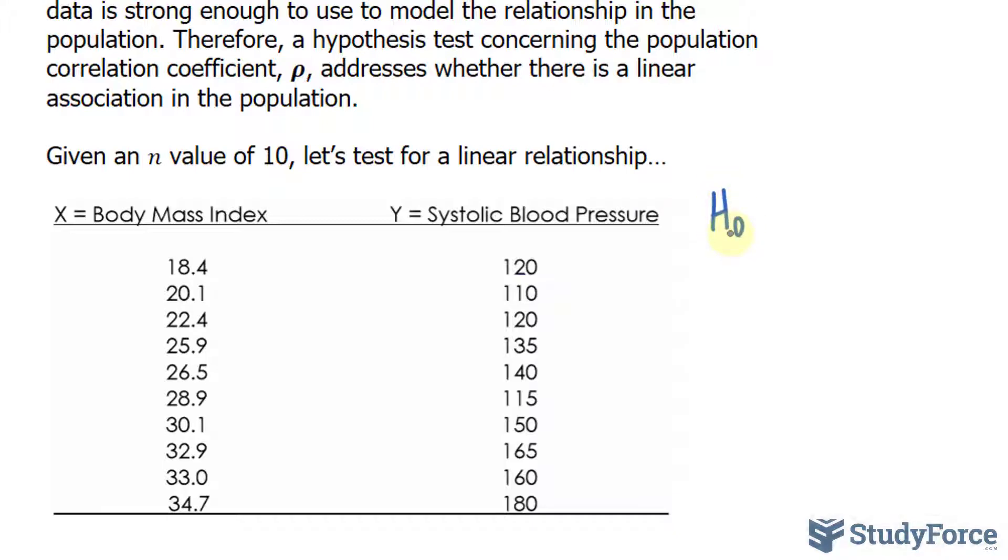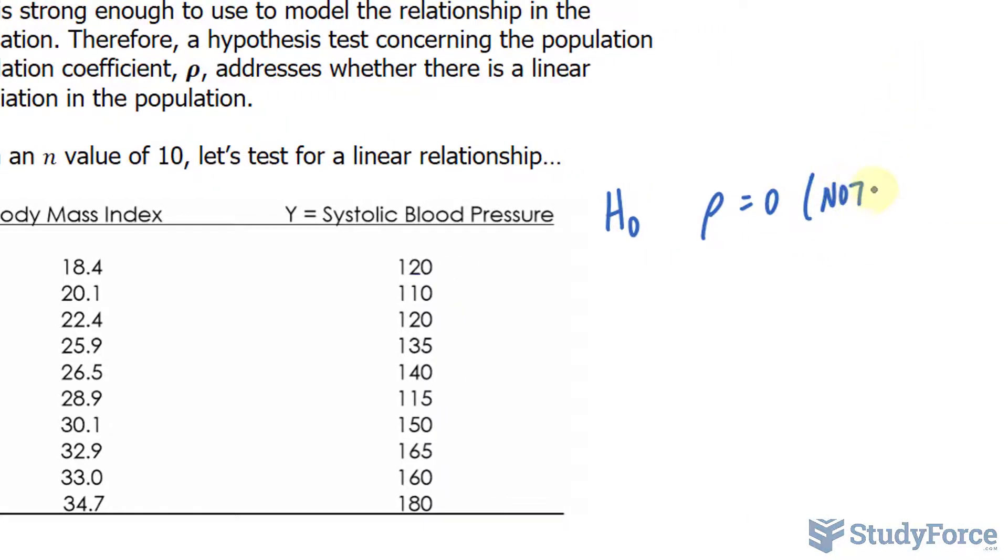Our null hypothesis is that rho equals 0. If rho is equal to 0, then it's not linear. So I'll write down not linear, and this happens if we have insufficient evidence to favor the alternative. The alternative hypothesis is that rho does not equal 0. If rho does not equal 0, then it is linear.